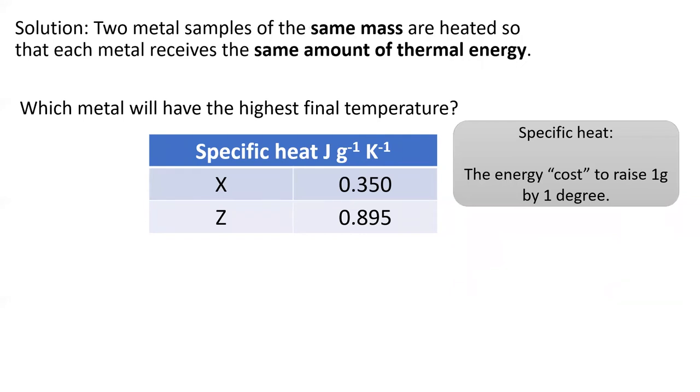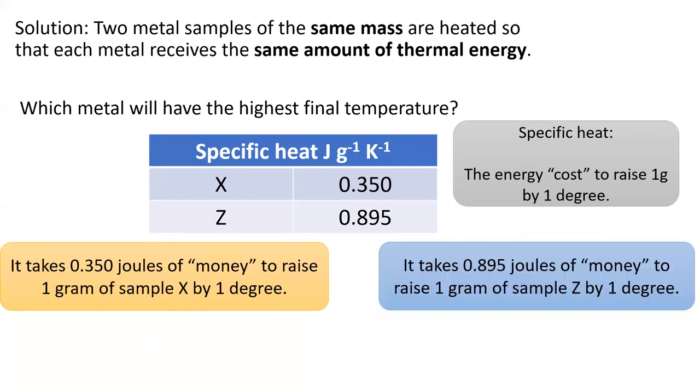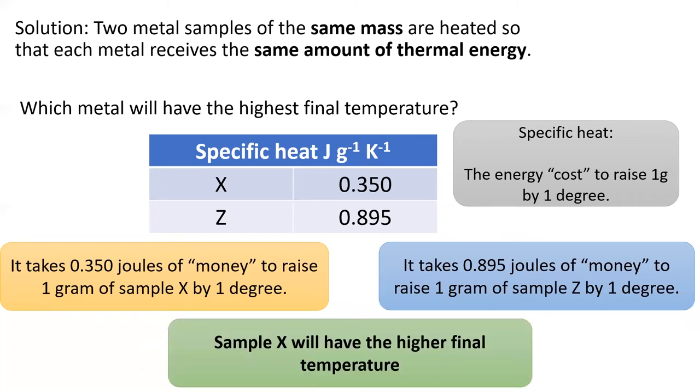I like to think of specific heat as the energy cost of raising one gram of substance by one degree Celsius. So it takes 0.35 joules of cash to raise one gram of x by one degree, and it takes 0.895 joules of cash to raise one gram of z by one degree. Which one's a better value? Sample x, and sample x will have a higher final temperature.